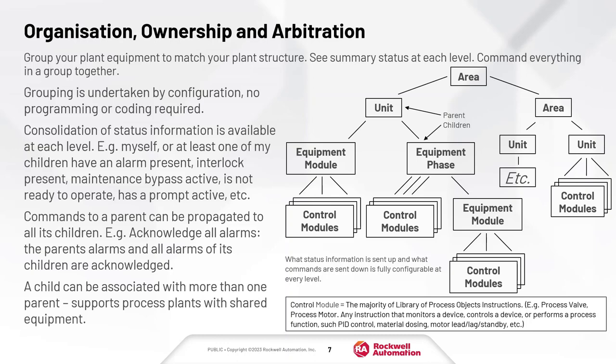Organization, Ownership and Arbitration allows the system implementer to group the plant equipment together to match your plant structure, and then obtain status information at each level and command groups of things in your plant from this location. It also gives you advanced diagnostic features, which we'll demonstrate a bit later in this video. In the example you can see here, we have grouped items in our plant into areas, and in those areas you can also have other areas, units, equipment modules, phases, and control modules. There are no rules about what has to be underneath what.